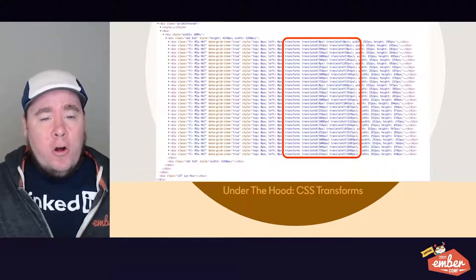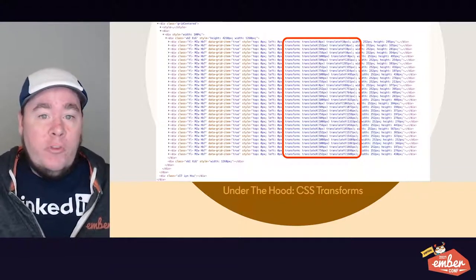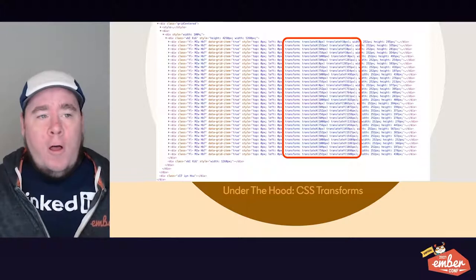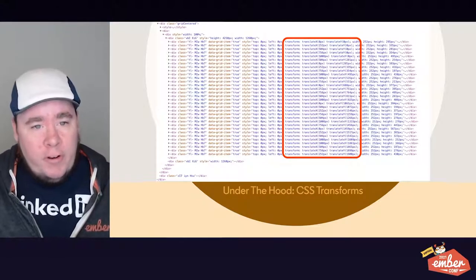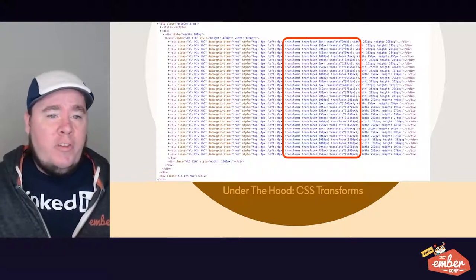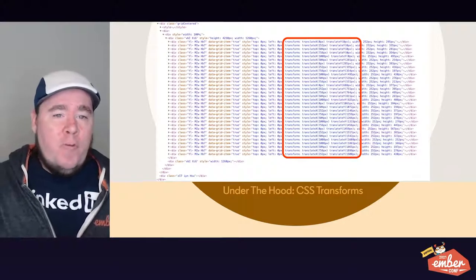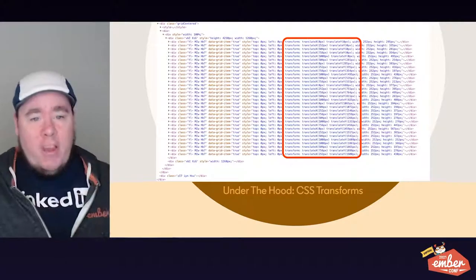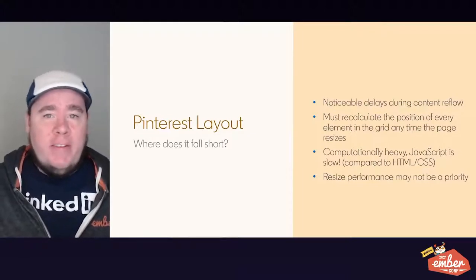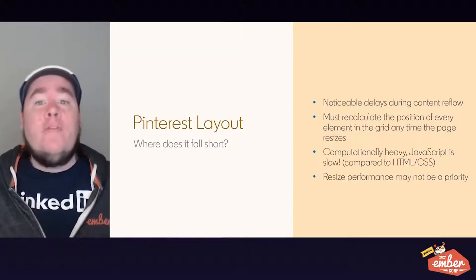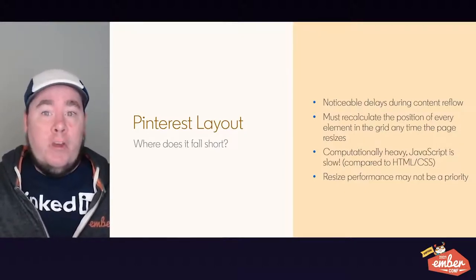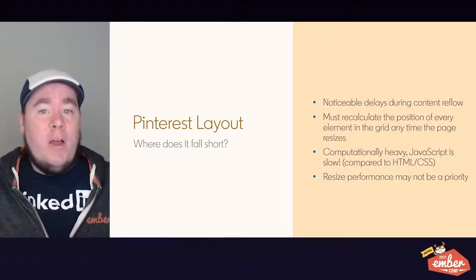Pinterest does their grid layout via explicit CSS transforms. They look at the height and width of each item and the overall container, then use JavaScript to calculate the exact position each item needs to be, setting explicit transforms to translate each item by pixels along the X and Y axis. However, this results in noticeable delays in content reflow because they must recalculate every element's position every time the page resizes — a computationally heavy approach since JavaScript is slow compared to native HTML and CSS features.